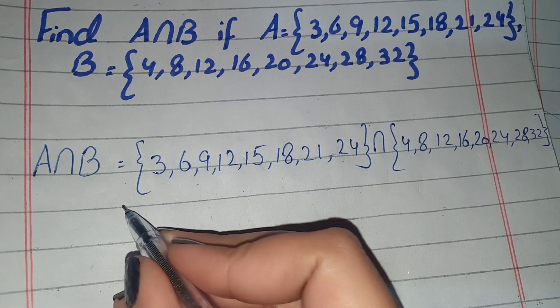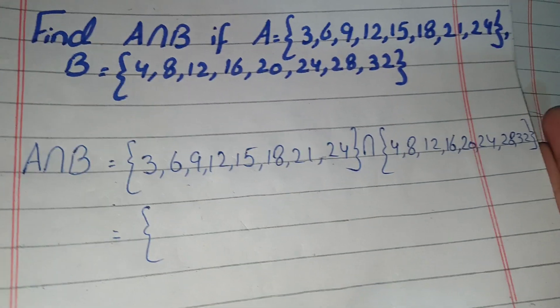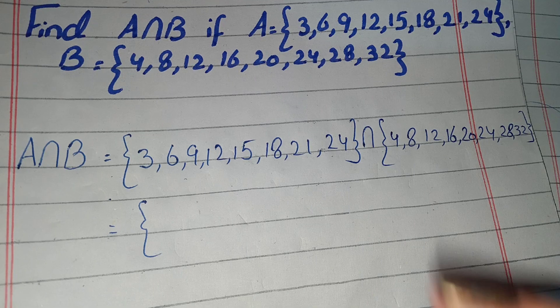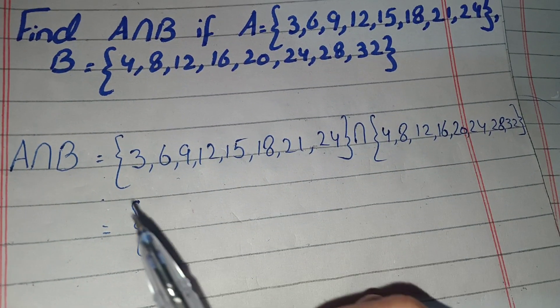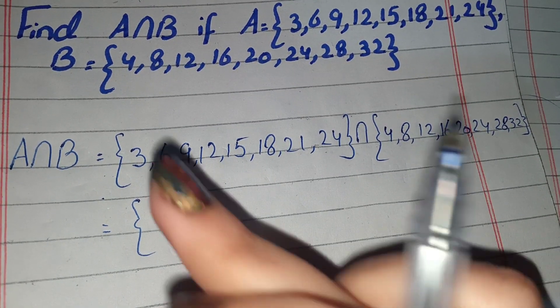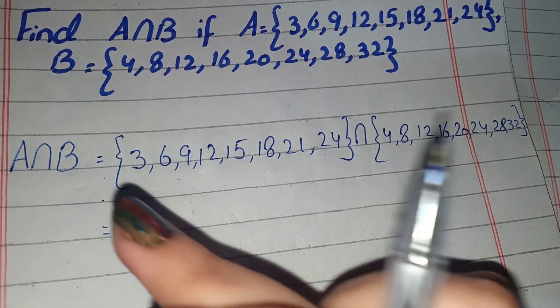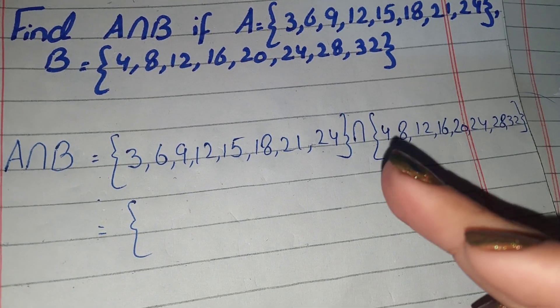Now we will find the intersection here. We will find which elements the two sets have in common. First, 1 is not in both sets, 2 is not, 3 is not, 4 is not.